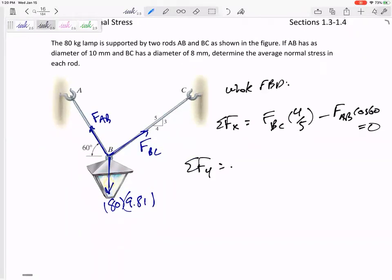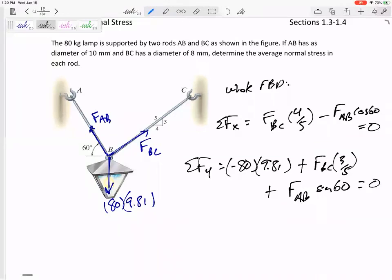Sum of the forces in Y: negative 80, 9.81, FBC, the 3 fifths component, and FAB sine 60 equals zero. Y'all remember that from statics.